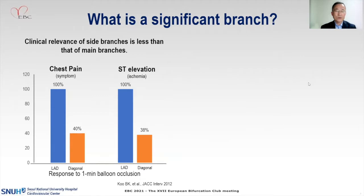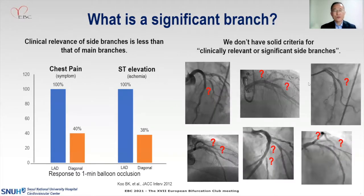In this study, with an intentional one-minute balloon occlusion, chest pain and ST segment elevation or ischemia occurs only in 40% of the branches, in contrast to 100% of the main branch. So the problem is, for these side branches, we don't have solid criteria for significant branches.